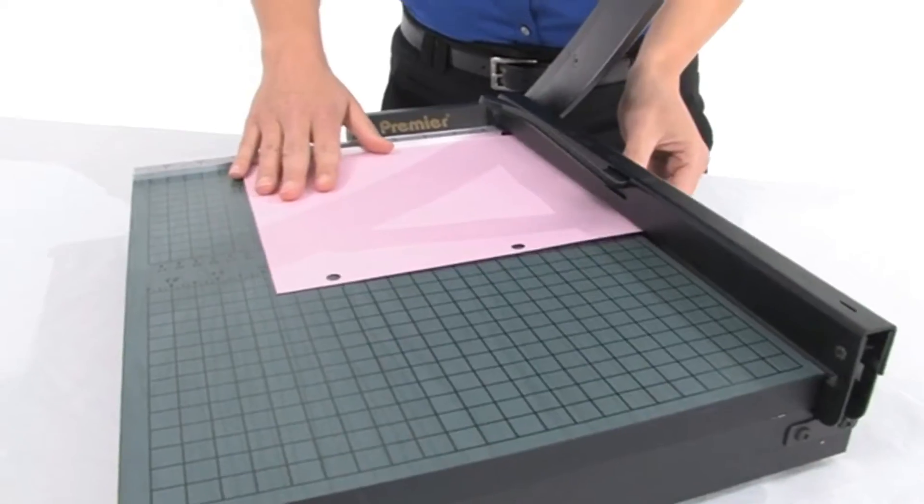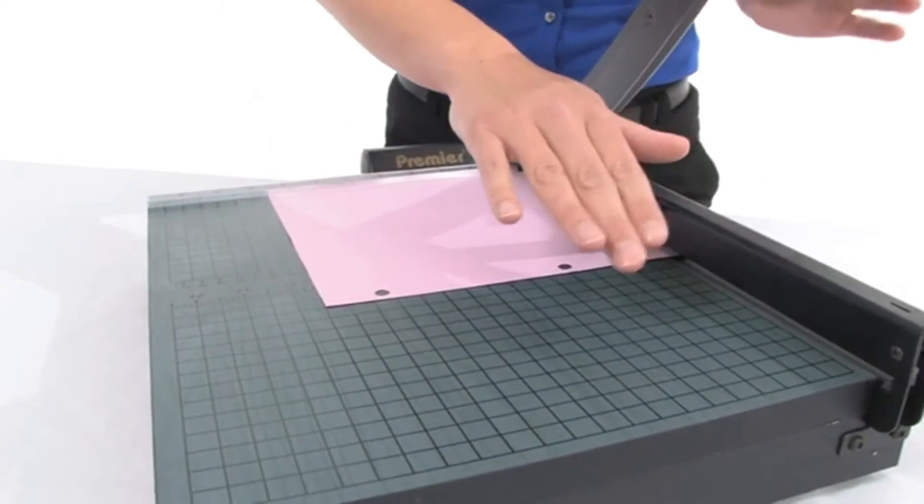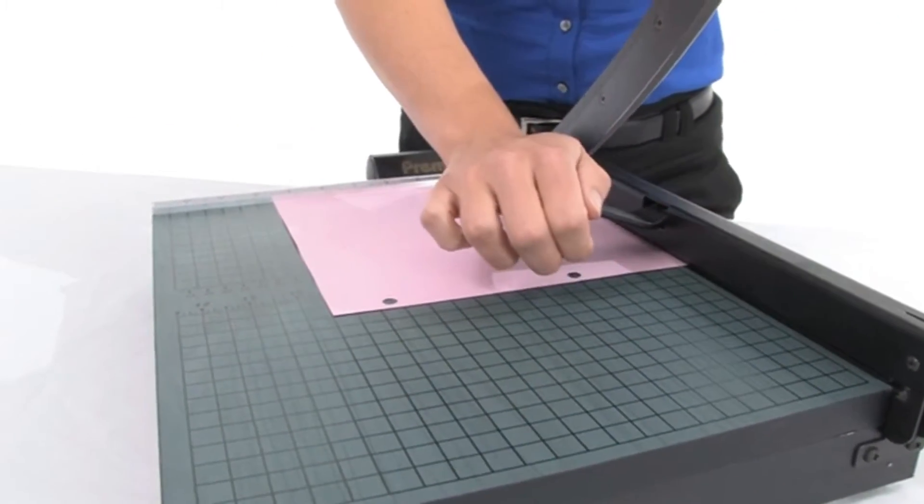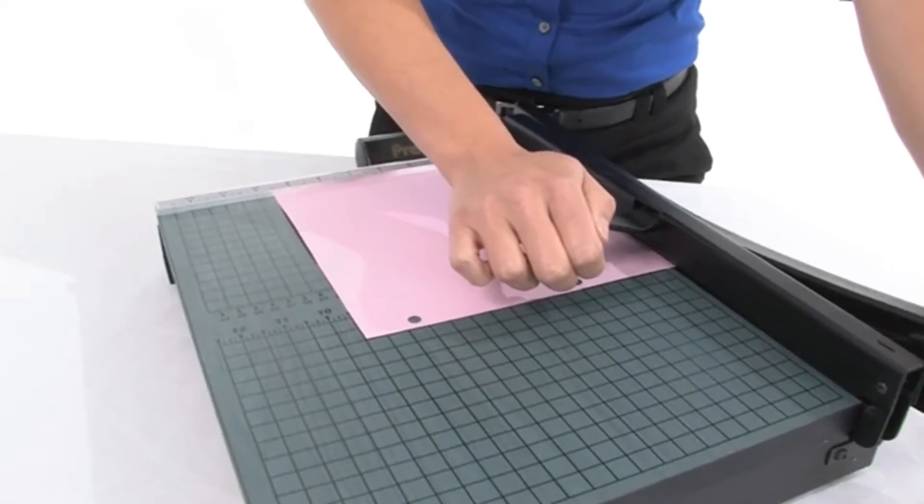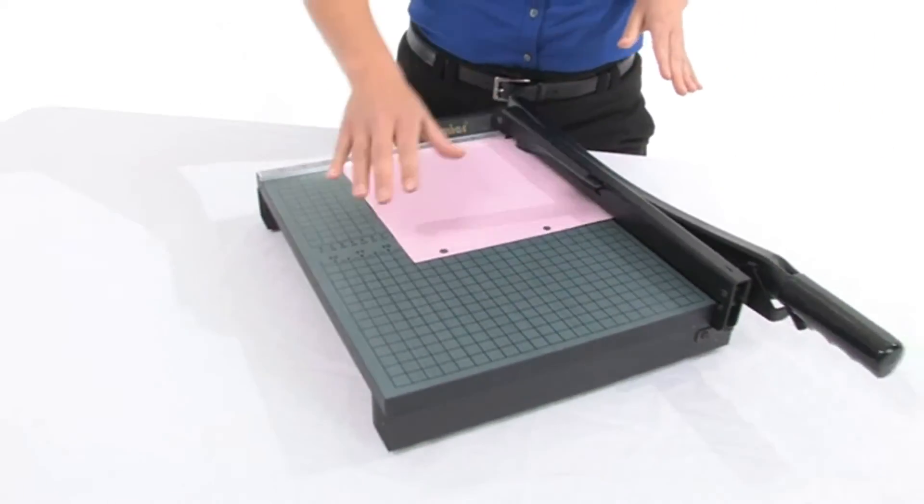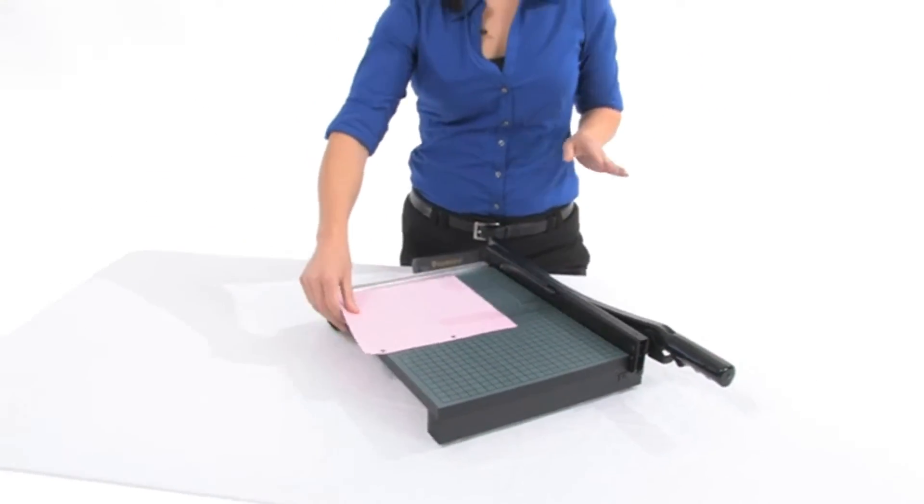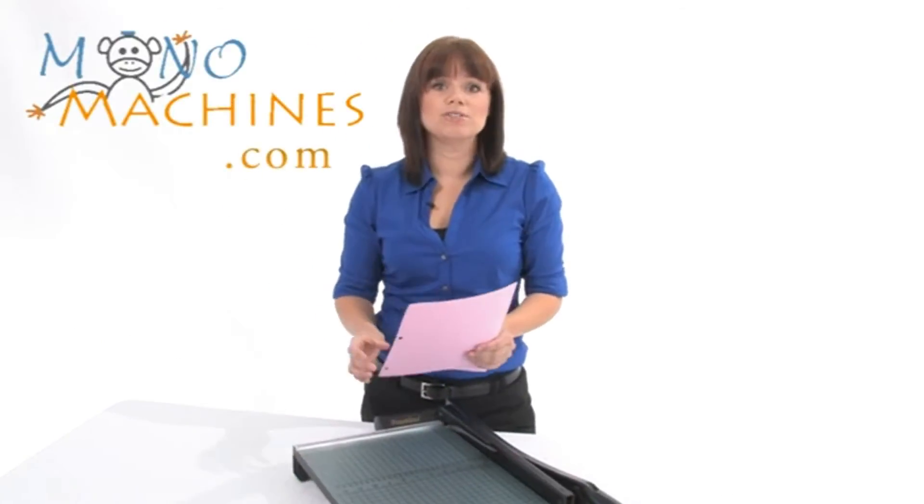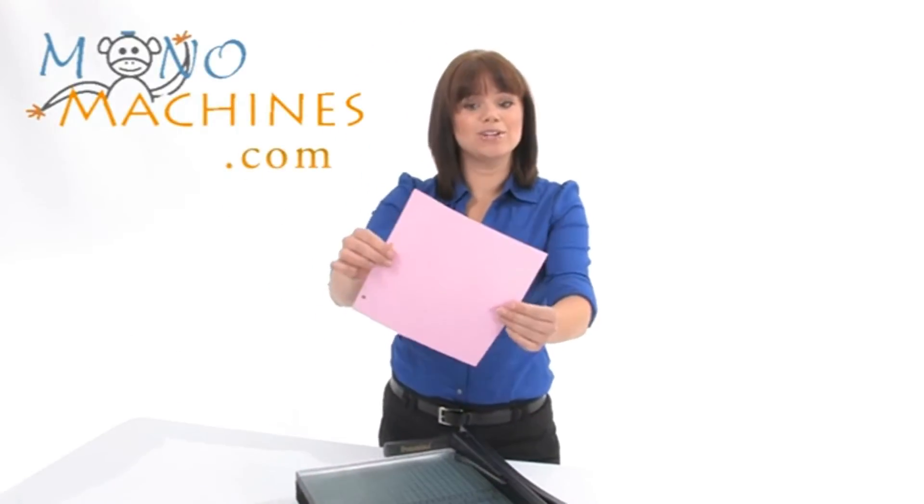I'm going to show you how we use this. I'm going to hold down the clamp, and this can cut up to 30 sheets of paper. Even though it's quite heavy duty—one to 30 sheets of paper—you're still going to get a nice clean line. So have a look at that. Thanks for watching.